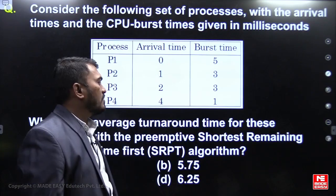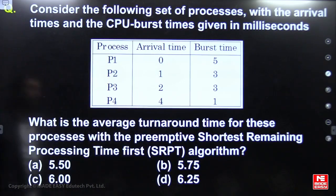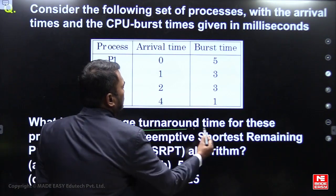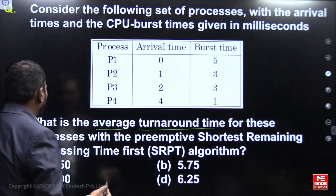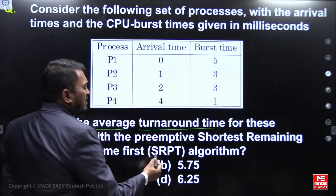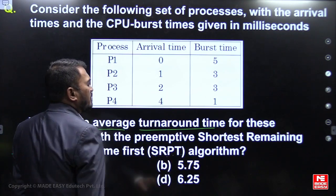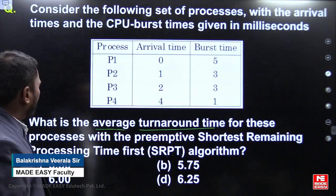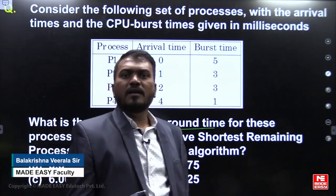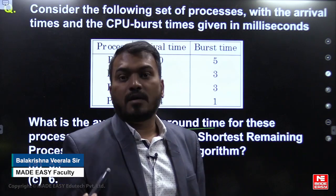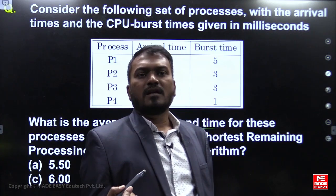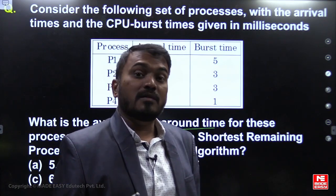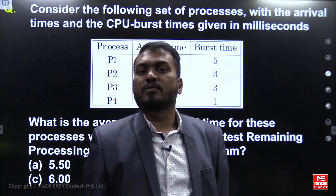In this question, he is asking you to find out the average turnaround time using preemptive shortest remaining time processing — that is SRTF, or shortest remaining time first. Both SRTF and preemptive shortest job first mean the same thing.